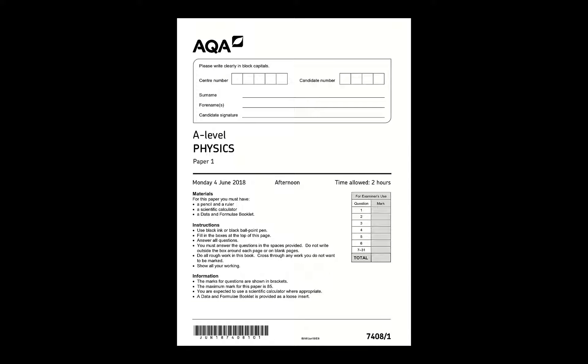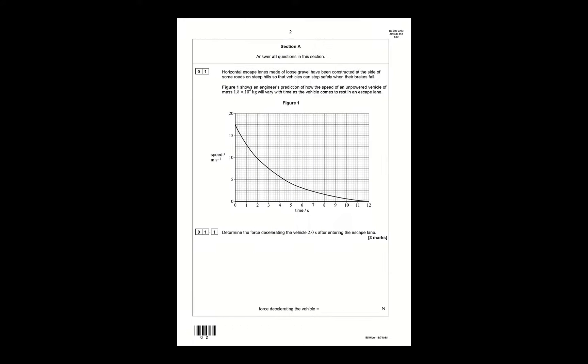All right, it was requested that I look at the A-level physics paper 1 and go through it, so I'm going to do that now. Question 1. Horizontal escape lanes made of loose gravel have been constructed at the side of some roads and on steep hills so that vehicles can stop safely when their brakes fail. Figure 1 shows an engineer's prediction of how the speed of an unpowered vehicle will vary with time as the vehicle comes to rest in an escape lane.